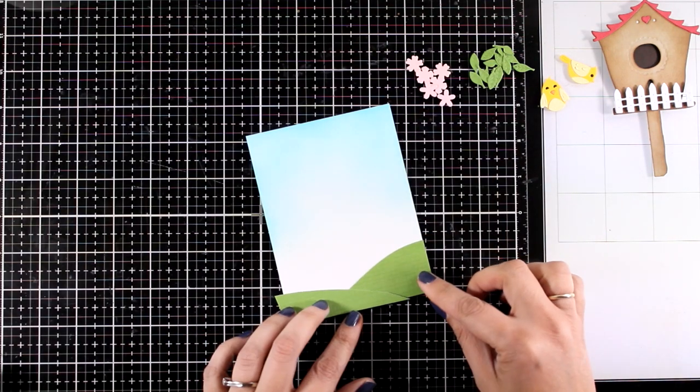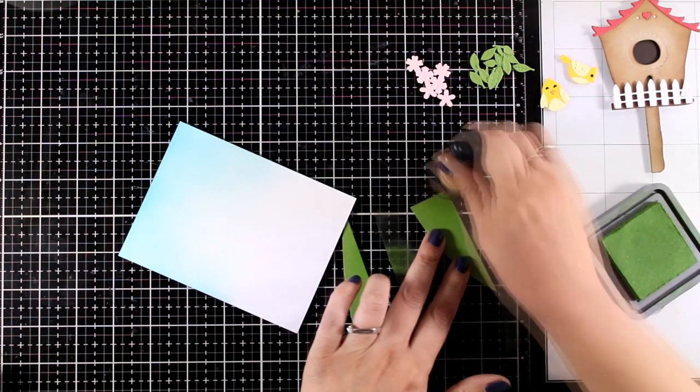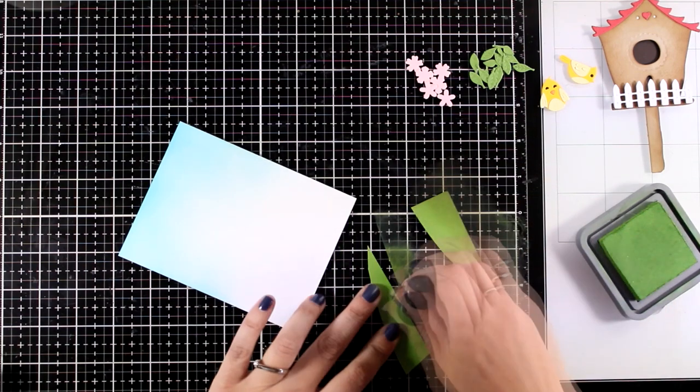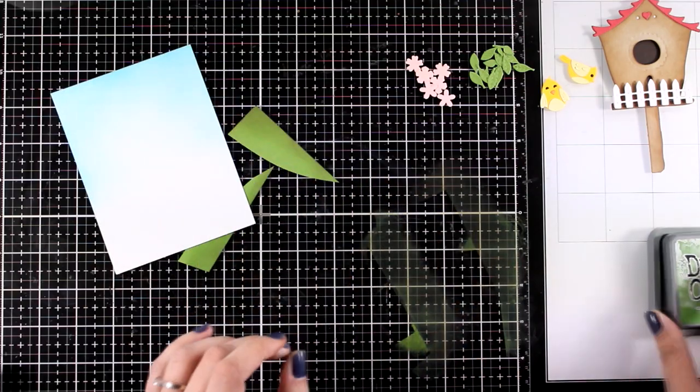I'm just auditioning all the pieces directly on my card base and if I need to I can do some adjustments and then I'm going to ink it up just a little bit to give it more depth and so that it doesn't look so flat.